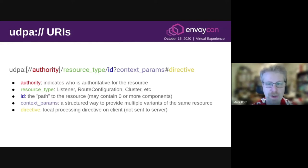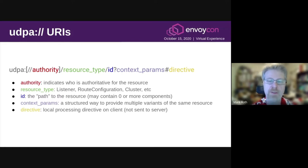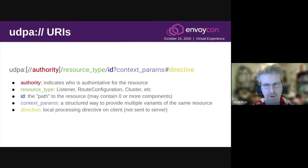The next part of the URI is the resource type, which is listener, cluster, route configuration, that sort of thing. The ID is essentially the path part of the URI — it can be any string that you want. It's totally up to you as an authority owner as to how you want to lay out your resource names. Context params are similar to query params in an HTTP URI. They provide a way to serve multiple variants of the same resource, and we'll talk more about that in a minute. The final part of the URI is the directive. This is similar to the fragment in an HTTP URI — it's a directive for how the client should interpret or use some part of the resource, but it's never actually sent to the server. It's only interpreted on the client.